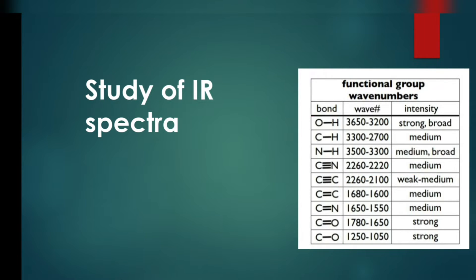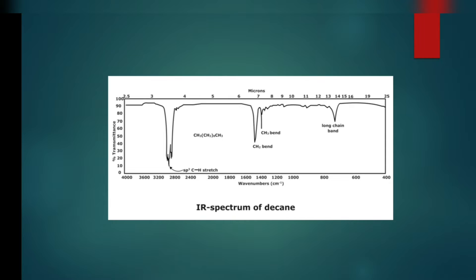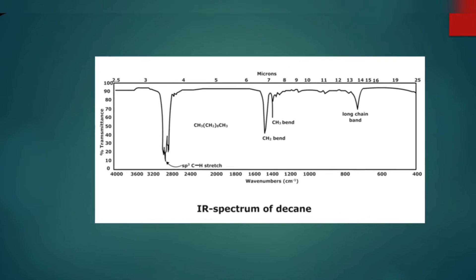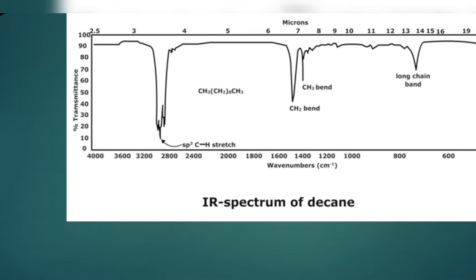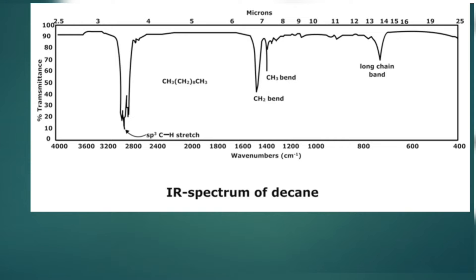Moving on, this is the first spectrum, which is of decane. How can you understand that this spectrum is of decane? First of all, the sp3 C-H stretch occurs at about 3000. So whenever there is a peak at 3000, it means that there is an sp3 C-H present in the given molecule.